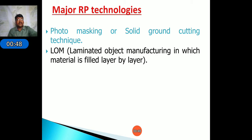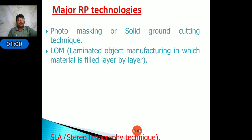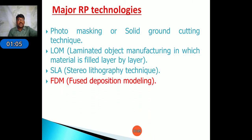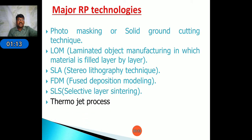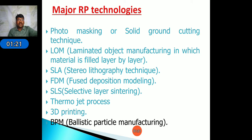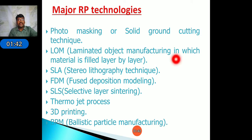The major RP technologies include: photo masking or solid ground cutting; LOM — Laminated Object Manufacturing, in which material is built layer by layer; SLA — Stereolithography; FDM — Fused Deposition Modeling; SLS — Selective Laser Sintering; Thermo Jet Processing; 3D Printing; and BPM — Ballistic Particle Manufacturing. These are classified based on liquid, solid, and powder states.